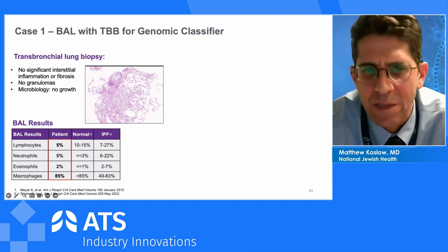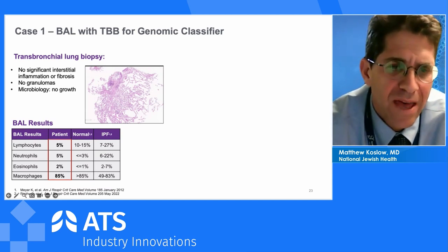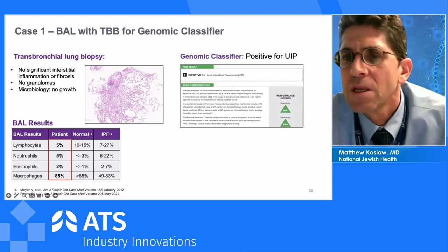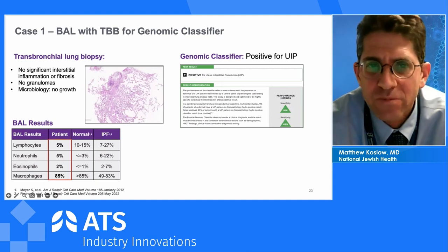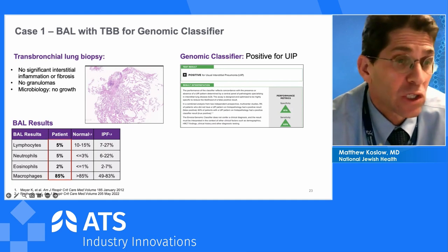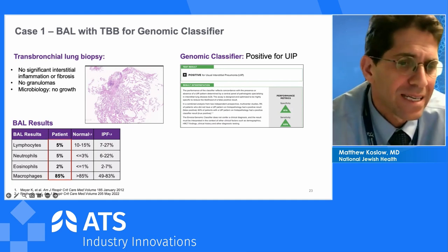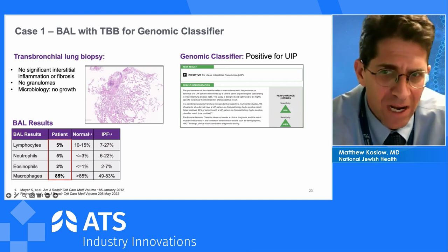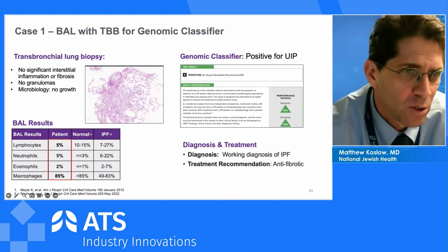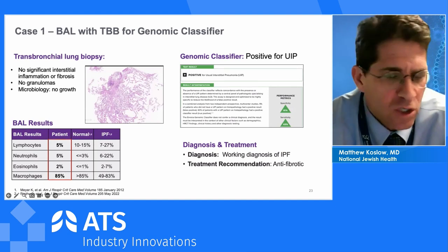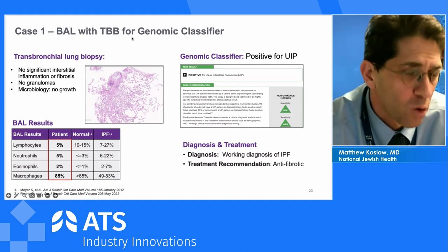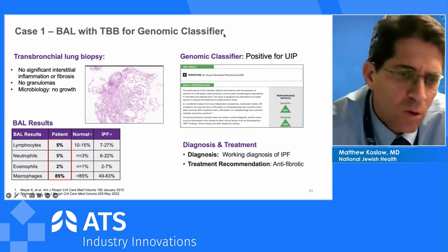What ended up happening in this case is we went for bronchoscopy. The histopathology was non-diagnostic, but we do have the BAL results. Macrophages are usually around 85% in normal lung. Above 25% eosinophils would be consistent with eosinophilic pneumonia; above 50% neutrophils suggests acute lung injury, aspiration, or infection; lymphocytes above 15% suggests HP or NSIP, particularly when above 25%. This patient had 5% lymphocytes — similar to the spectrum seen in normal or IPF. The genomic classifier was positive for UIP.